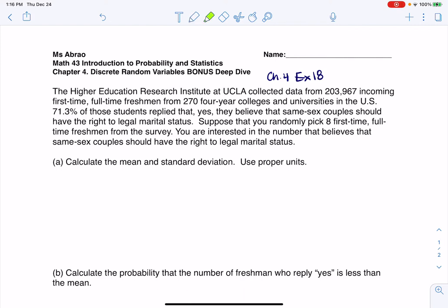If you read through this problem, a couple of the buzzwords that pop out is this phrase here. We're keeping track of the number that believe same-sex couples have the right to legally marry. And if you're wondering of number of who, well, right here it says we're going to randomly pick eight first-time, full-time freshmen for our survey. So we're going to go find these eight freshmen at random, and we're going to ask them, hey, what's your beliefs on same-sex couples having the right to marry? And we're going to keep track of the number that say yes. So my variable here is the number of freshmen in my sample of eight who believe same-sex couples have the right to legally marry.